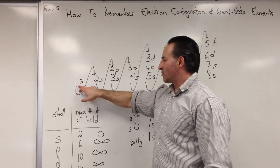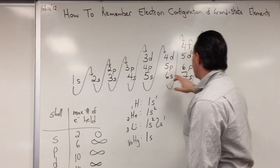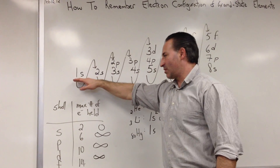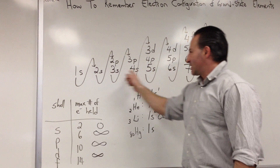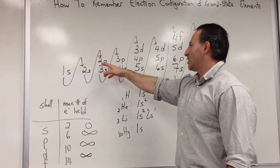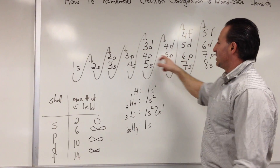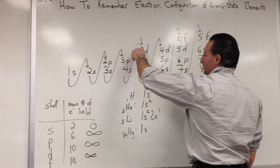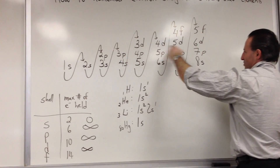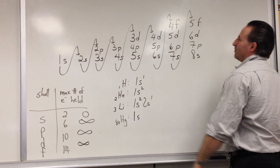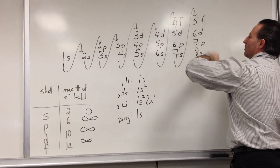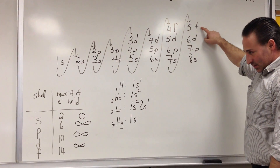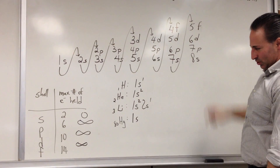We follow the arrows, starting from the lowest level and going to the higher quantum numbers. The way we draw this mnemonic is we do the numbers 1 through 8, putting S next to each number on the first level. Then we do numbers 2 through 7, putting P next to each number, skipping the first two. Then skip another two, put numbers 3 to 6 with D next to each one. Skip another two, 4 and 5, putting F next to each one. So S, P, D, and F represent the different electron orbital shapes.